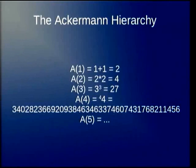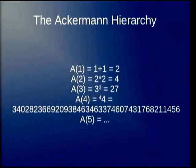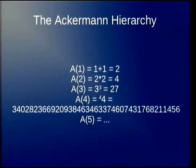The Ackermann hierarchy is: the first operator is 1+1, second operator is 2×2, third is 3^3, fourth is tetration of 4, fifth is pentation of 5. And we can see that the numbers grow rapidly — we get two, four, twenty-seven, a big number, and the fifth one has thousands upon thousands upon billions upon trillions — forty trillion digits.